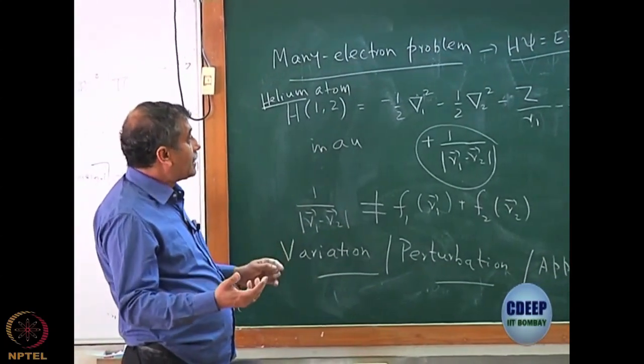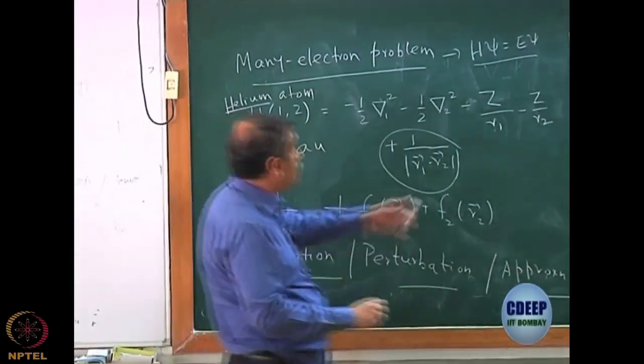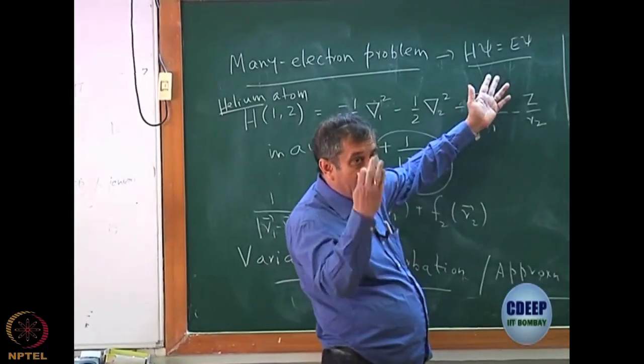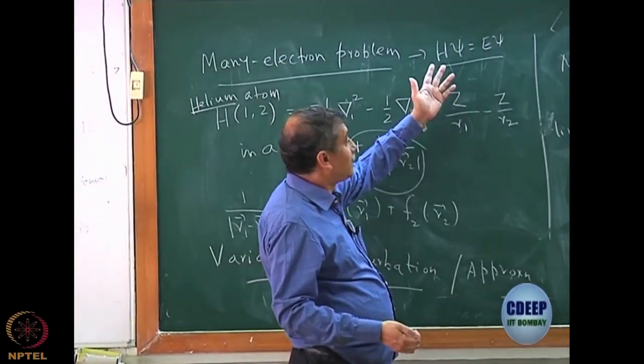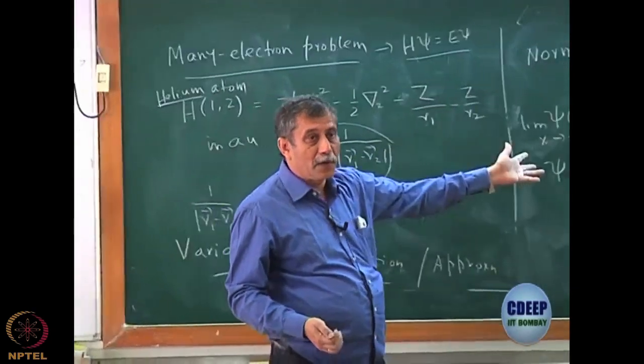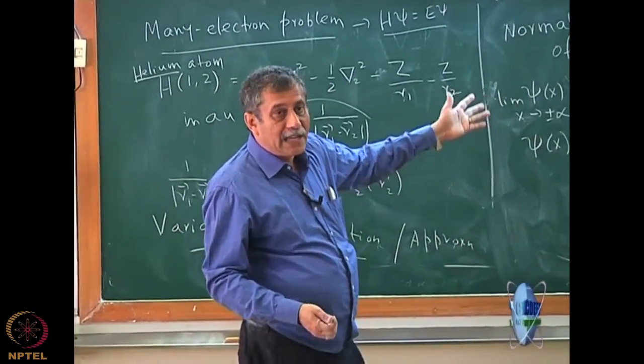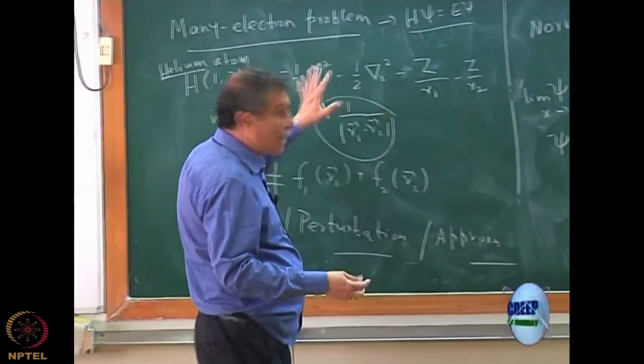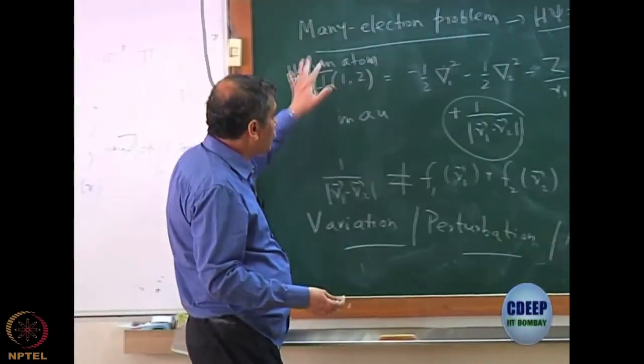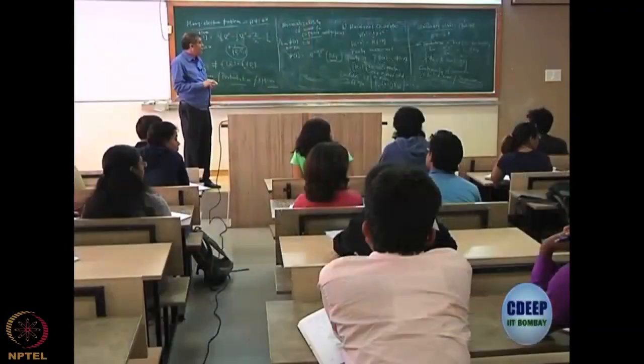We will also look at what kind of symmetry the wave function should have. This is something again we have said in the last class, that quantum particles must be either bosons or fermions. Electrons are fermions. The anti-symmetry is Slater determinant. We have done all that up to that point, but I think we will revise this very quickly.